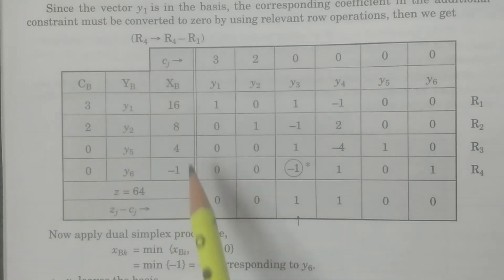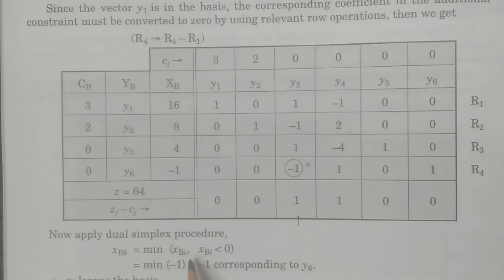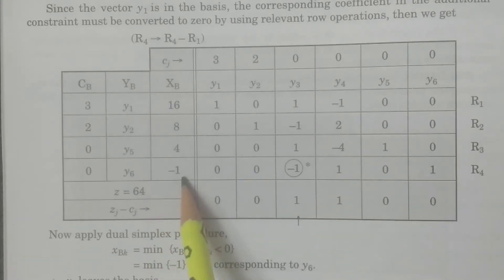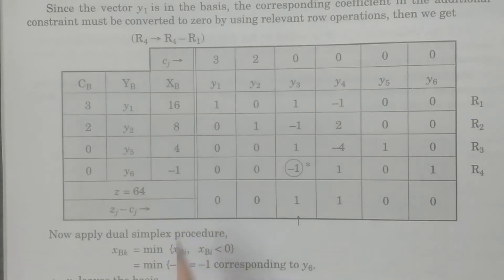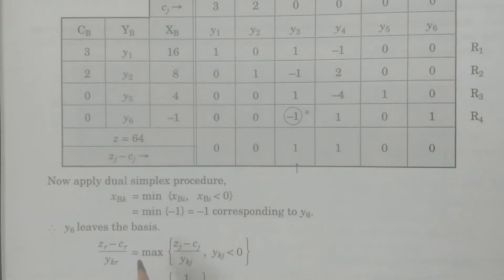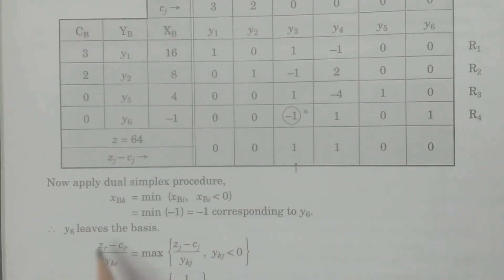In the dual simplex procedure, we calculate XBK = minimum of XBI where XBI < 0. Observe the sign of XBI — the only negative value is −1, corresponding to y6. Therefore y6 leaves the basis.